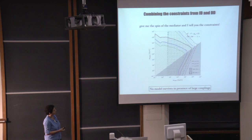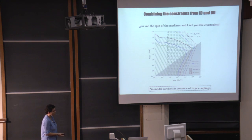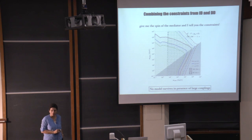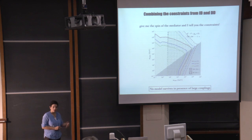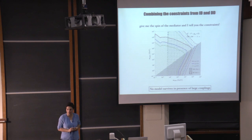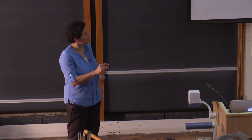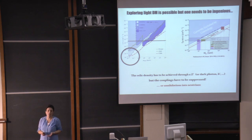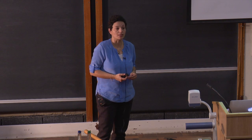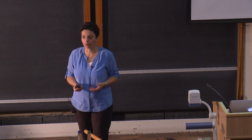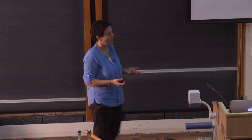Combining everything and looking at constraints in the context of fine tuning: the result is that everything is excluded. When you look at this exclusion plot, it's for very large couplings. If you decrease the coupling you open up the parameter space again, but in terms of fine tuning, to survive with almost any model you think about, you need very small couplings — a very small probability that dark matter interacts with the visible world. This means we have very little chance of detecting it, and that's almost the only way to still have a viable dark matter candidate today.